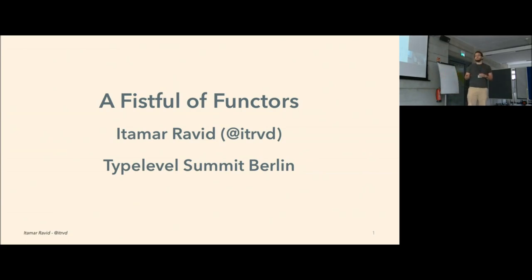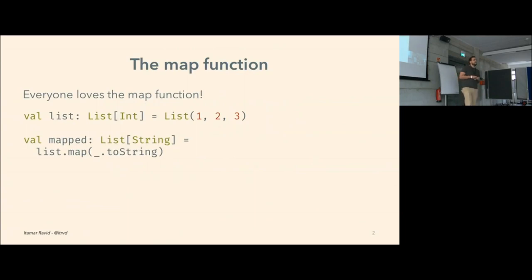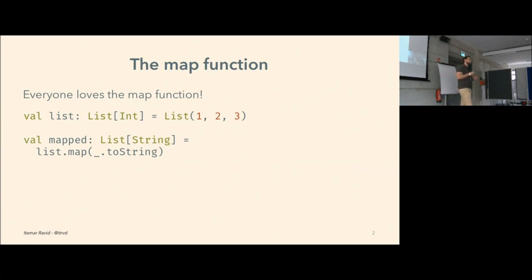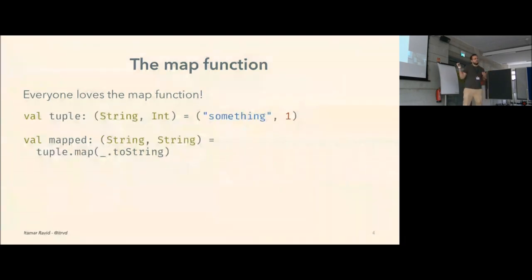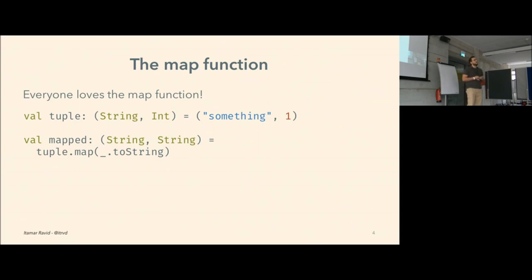What better way to get started than with the map function, which we all know and love. It lets us apply functions to elements of a list and convert integers to strings. And it lets us convert the maybe-present element of the option into a string as well. A lesser known definition of the map function is for the tuple, in which we can apply a function to the right element of the tuple and convert that integer to a string as well.